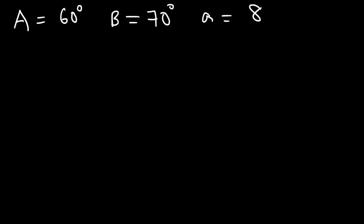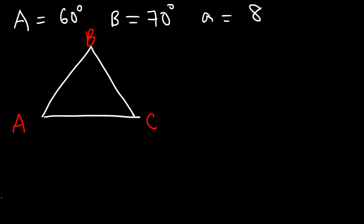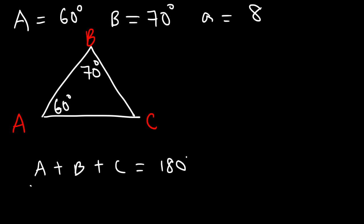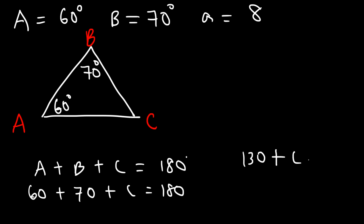The first thing I would do is draw a picture. Let's label this as angle A, B, and C. We have angle A equal to 60 degrees and angle B equal to 70. To find angle C, we know that A plus B plus C has to add up to 180. So 60 plus 70 is 130, and 180 minus 130 is 50. So the missing angle C is 50 degrees.